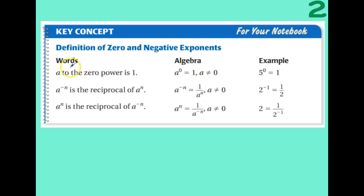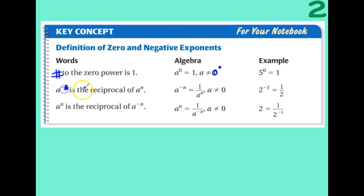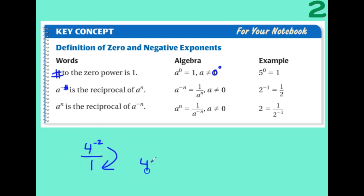Let's review what we just learned. Any number 'a' to the power of zero is one — anything to the zero power is one. But you can't have zero to the zero power. If you try to plug that into your calculator, it will tell you it's undefined. So for example, five to the power of zero is just one. Anything with a negative exponent — any negative number up in the exponent — is really the reciprocal of the positive exponent.